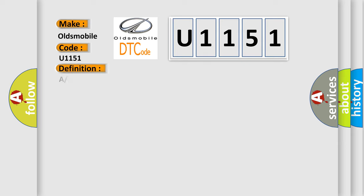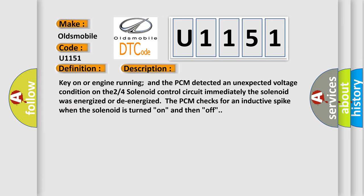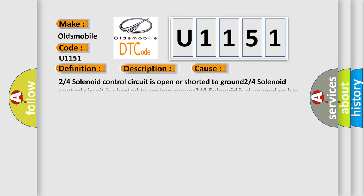The basic definition is A/T 2-4 solenoid circuit failure. Key on or engine running, and the PCM detected an unexpected voltage condition on the 2-4 solenoid control circuit immediately after the solenoid was energized or de-energized. The PCM checks for an inductive spike when the solenoid is turned on and then off.